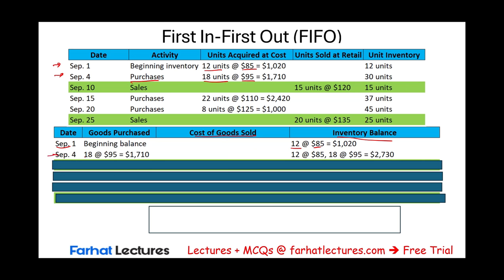Disadvantages of FIFO: it gives higher profit in inflationary times because you're matching old, lower costs against new, higher selling prices. Higher profit leads to higher tax liability — a significant disadvantage when prices are rising. It also creates outdated cost matching: you're matching old costs with new prices, so profitability figures can be misleading. And during deflationary periods, older higher costs matched against lower revenue result in lower profit.